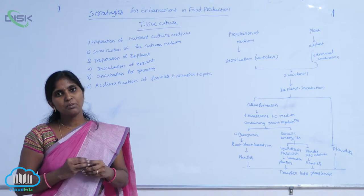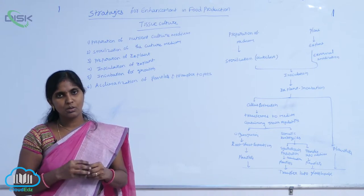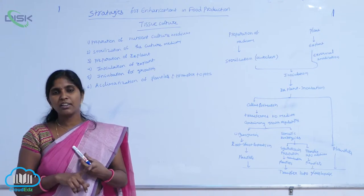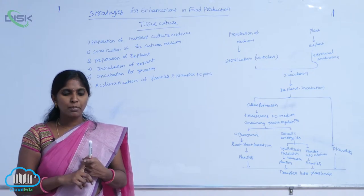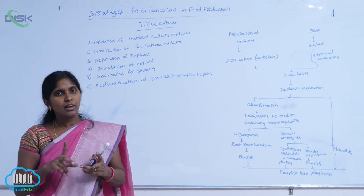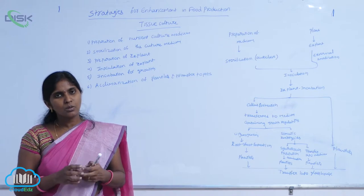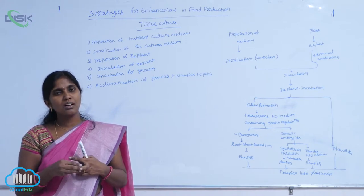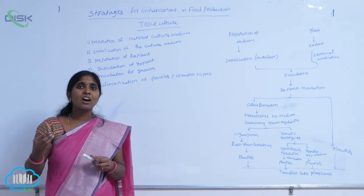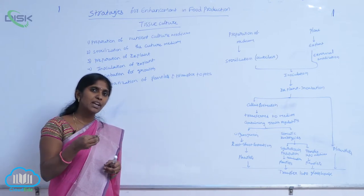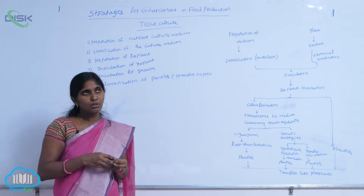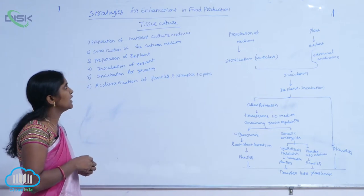The nutrition medium consists of rich nutrients. What nutrients are required by the plant generally? Carbohydrates, amino acids, macro and micronutrients, and enzymes — many nutrients are required by the plant. In vitro cultivation artificially provides these to the explant in the form of nutrition medium. So the first step is preparation of the nutrient culture medium.